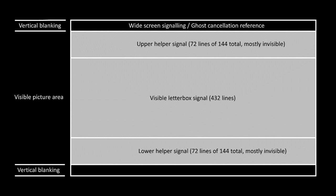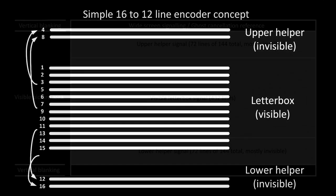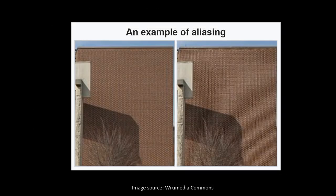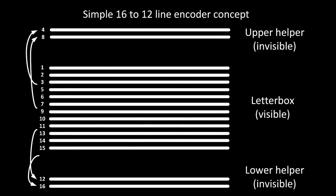The visible letterboxed image is basically three of every four lines of the original — but of course it is nowhere near that simple in practice. Let's imagine a simple encoding process where the lines are literally rearranged: three lines go into the visible letterbox and one is hidden in the black bars, and so on. This would kind of work; however, the visible image would suffer from aliasing, a problem which arises when a screen is attempting to display an image which exceeds its resolution.